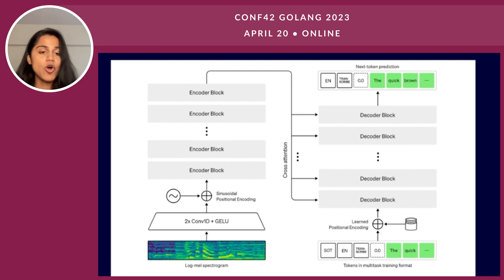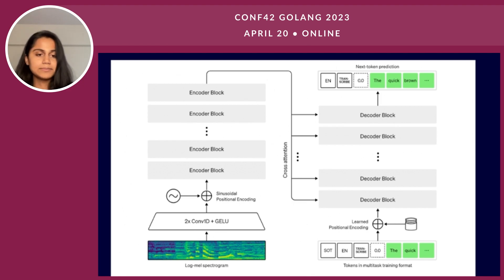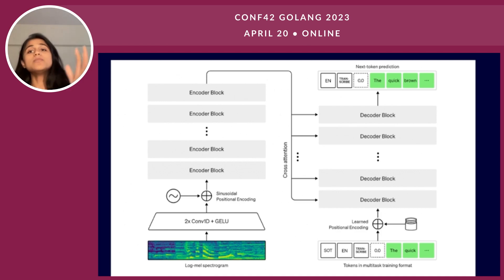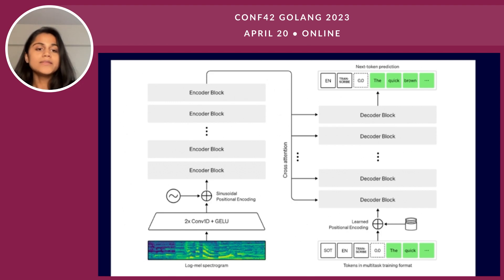You can see the architecture of the Whisper model on the screen. The Whisper architecture is a method used to convert spoken language into written text. It works in a step-by-step manner using a specific type of computer model called a transformer. The speech is divided into small parts, each 30 seconds long, and then changed into a format that can be understood by the model. This format represents the speech in a visual way, showing its features and patterns. The model also has two parts: an encoder and a decoder. The encoder processes the speech and the decoder converts it into text.